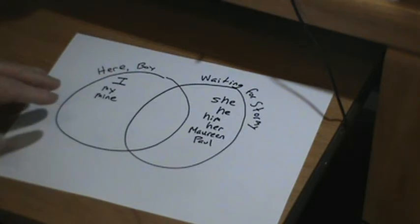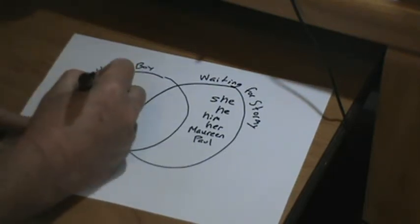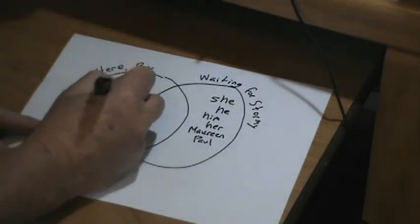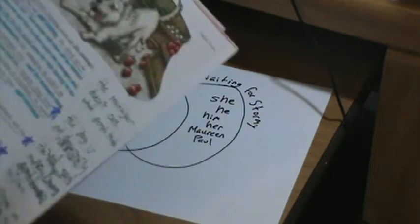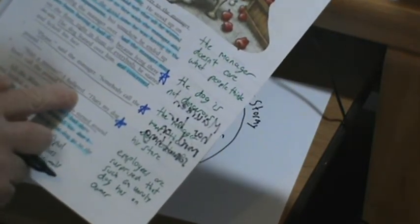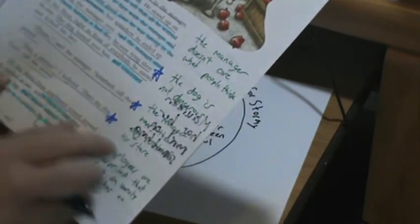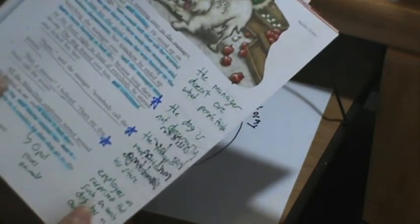So that's how they're different. Also, thinking about 'Here Boy,' the language used is more informal, more conversational, because it's what the character is saying. For example: 'I shout,' 'I hollered,' 'that's my dog,' 'don't call the police,' or 'don't call the pound.' So it's more informal, more conversational.